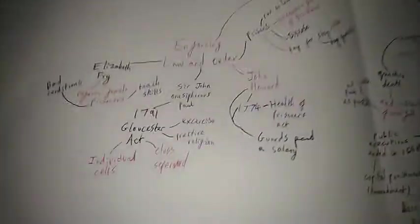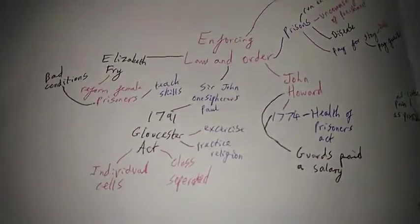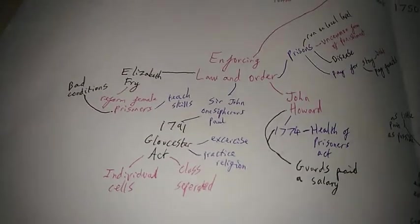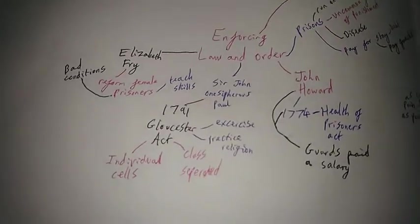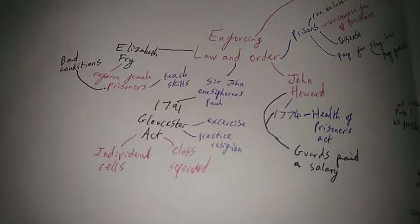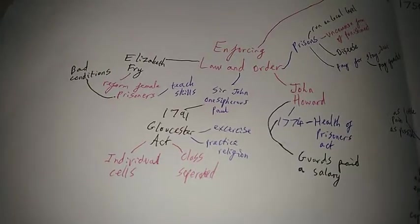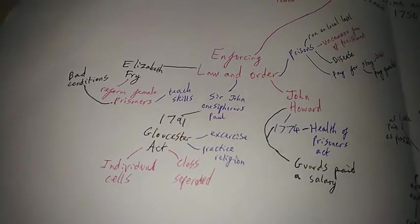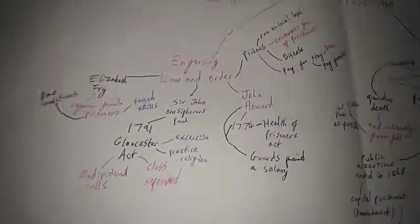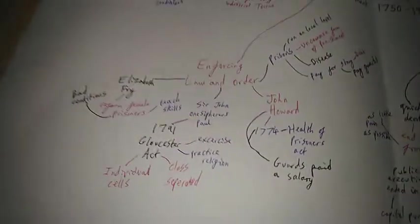And then another person called Sir John Onesiphorus Paul in 1791 created the Gloucester Act because he was the person in Gloucester. This made it so in prisons people were allowed to exercise, they were allowed to practice their religion, there were individual cells and classes were separated. All of these ideas lead more to the idea of rehabilitation. Someone goes in prison not just to be punished but to change themselves and to become better individuals.